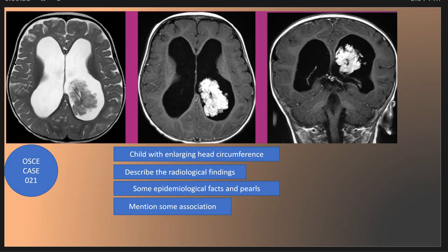As we see here in this patient, we have T2 and T1 after contrast axial cuts, and coronal cuts T1 after contrast. In T2, we have a lobular frond-like mass in the atrium of the lateral ventricle. This mass also has internal flow voids due to vascular pedicle, and there is avid enhancement of the mass after IV contrast, as we see here.